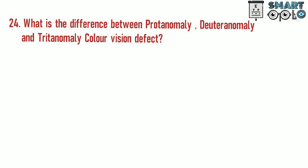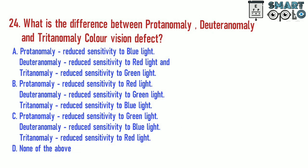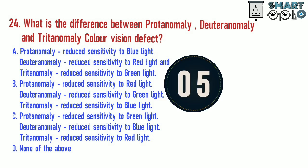Question 24. What is the difference between protanomaly, deuteranomaly, and tritanomaly color vision defects? A. Protanomaly: reduced sensitivity to blue light; deuteranomaly: reduced sensitivity to red light; tritanomaly: reduced sensitivity to green light. B. Protanomaly: reduced sensitivity to red light; deuteranomaly: reduced sensitivity to green light; tritanomaly: reduced sensitivity to blue light. C. Protanomaly: reduced sensitivity to green light; deuteranomaly: reduced sensitivity to blue light; tritanomaly: reduced sensitivity to red light. D. None of the above.